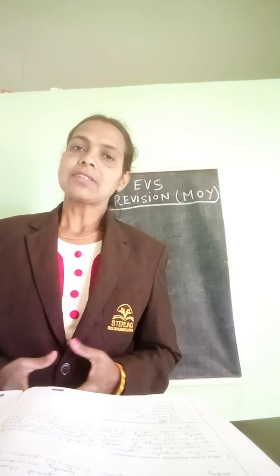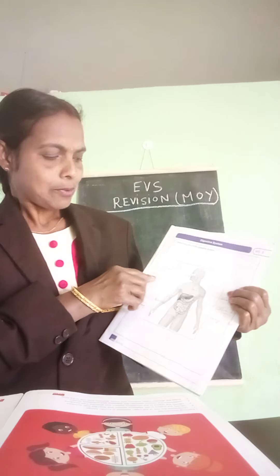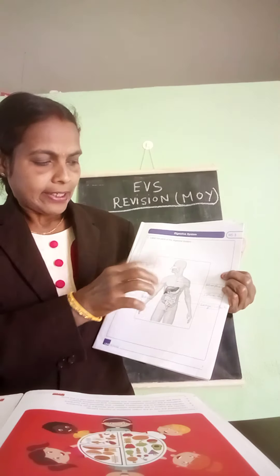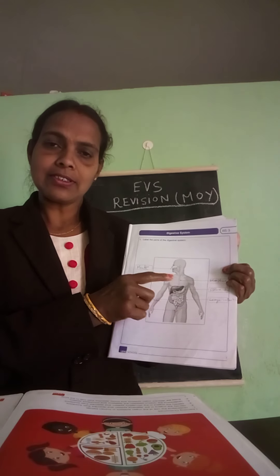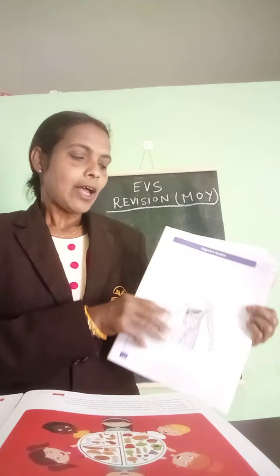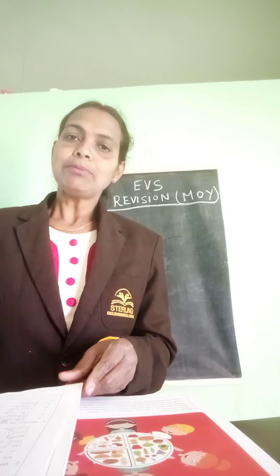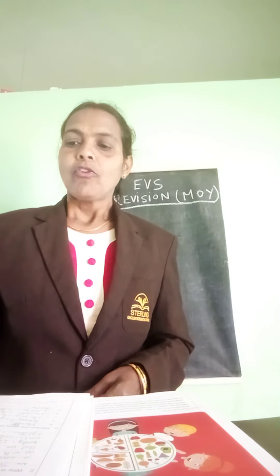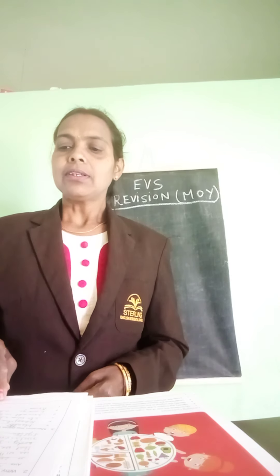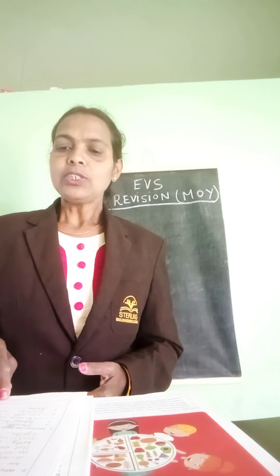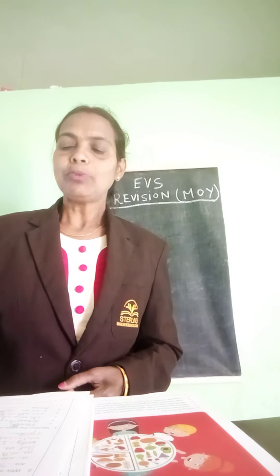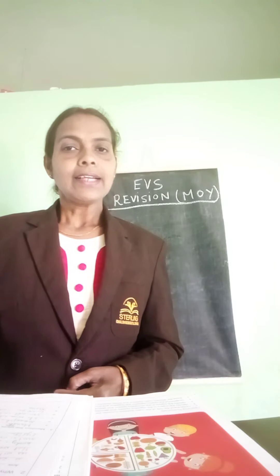Why is the digestive system needed? The digestive system includes the mouth, oesophagus, stomach, small intestine, large intestine, and anus. The digestive system is needed because food is essential for our body to grow. Food provides us with energy to work and play, but food is not directly usable by our body — it needs to be broken down into nutrients, which is done by the digestive system.